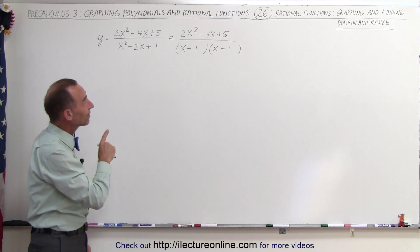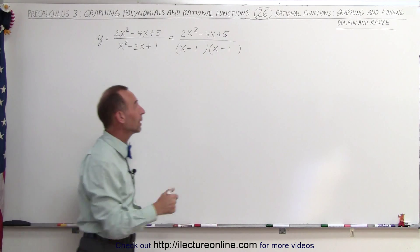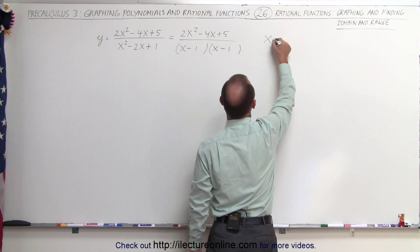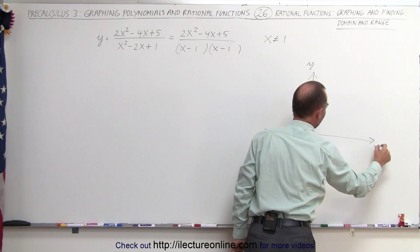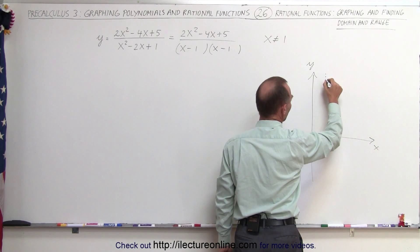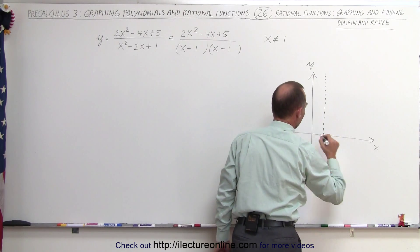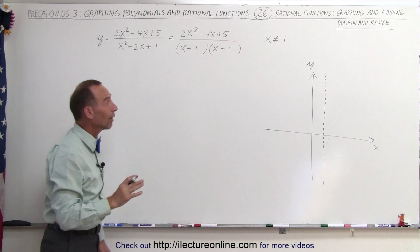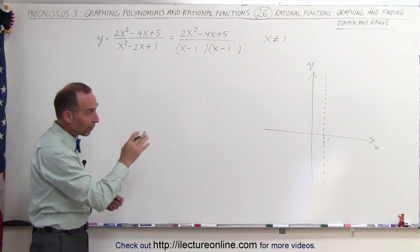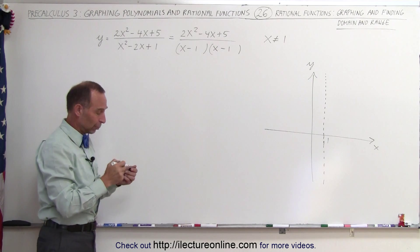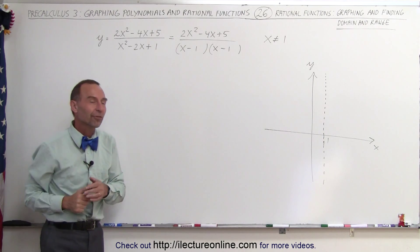This tells us that x cannot equal 1, because if x equals 1, we have a zero denominator. So x cannot equal 1. When we graph this function, we draw the y-axis and x-axis, and at x equals 1 we're going to have a vertical asymptote. The graph will not cross that line, because crossing it would mean a zero denominator, which makes the fraction undefined.